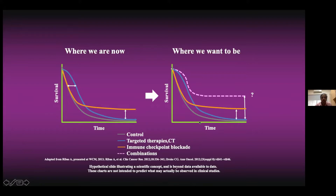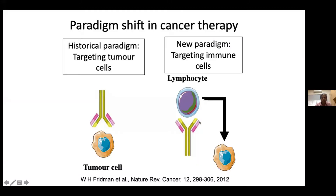There is a paradigm shift in cancer therapy when we talk about immunotherapy. Historically we have always targeted the tumor cell — including with biologics. But in immunotherapy we are not targeting the tumor cell; we are targeting the immune cell, specifically the lymphocytes. So the shift is from the tumor cell to the lymphocyte, and that is the important distinction between what we were doing before and what immunotherapy achieves.